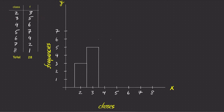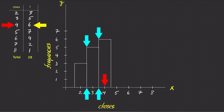For the third class four, the frequency is six. So draw a rectangle with a height of six on top of the class four. Notice how the tick on class four is in the middle of each side of the rectangle, and there is no gap between any rectangle.